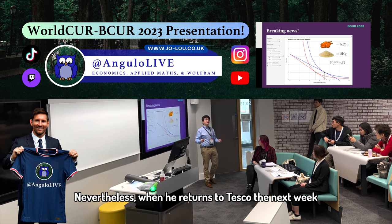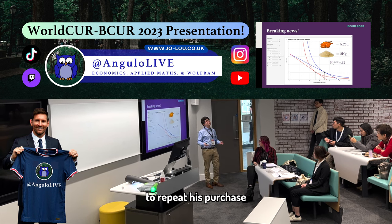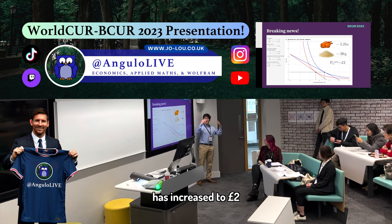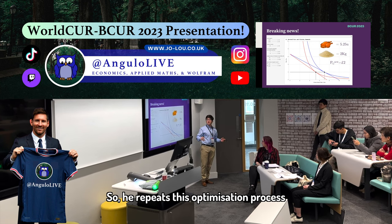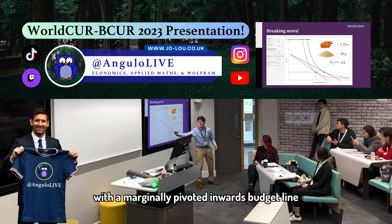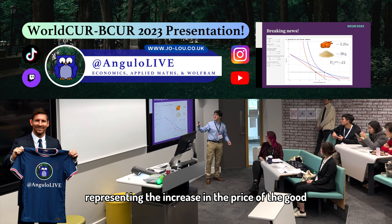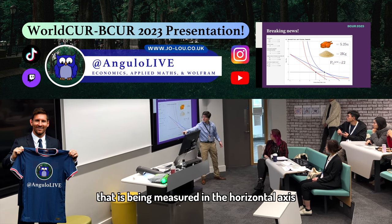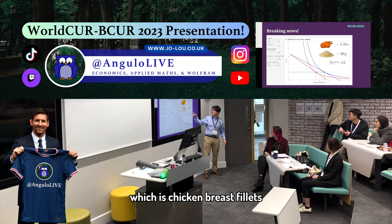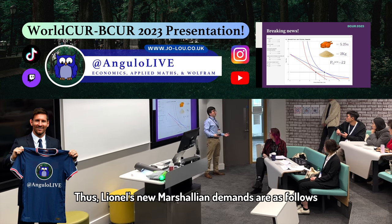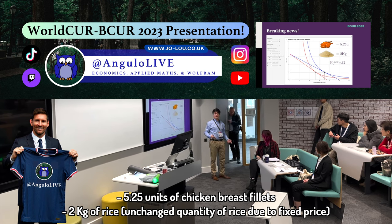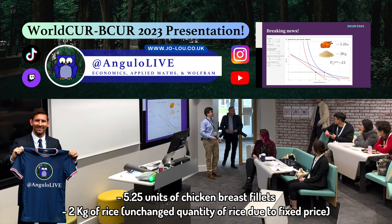Nevertheless, when he returns to Tesco the next week to repeat his purchase, he finds out that the price per unit of chicken breast has increased to £2. So, he repeats this optimization process with a marginally pivoted budget line, representing the increase in the price of the good that is being measured in the horizontal axis, which is chicken breast. Thus, Lionel's new Marshallian Demands are: 5.25 units of chicken breast and two kilograms of rice.